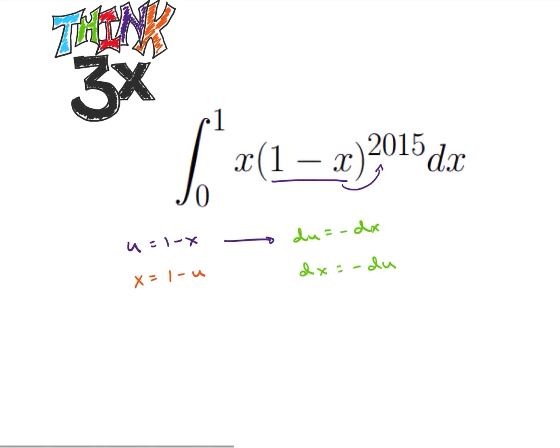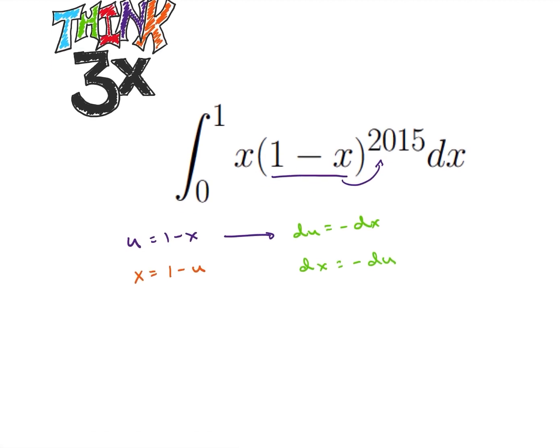So we're going to combine these together and rewrite our integral. Our bounds are going to change. When x is equal to 0, u is equal to 1. And when x is equal to 1, u is equal to 0. So our bounds are going to be from 1 to 0.